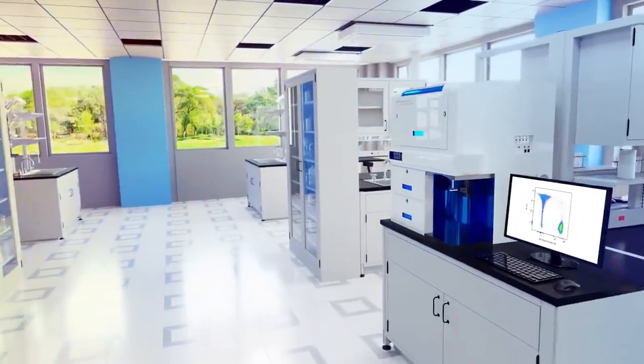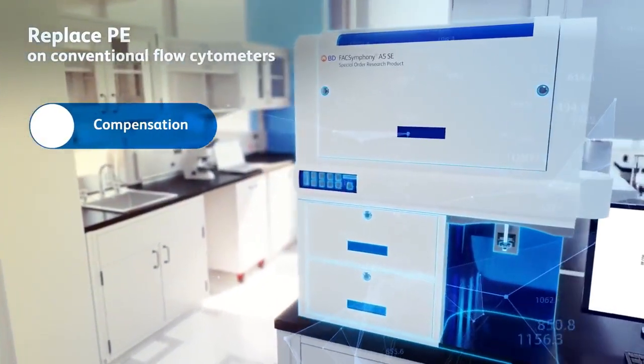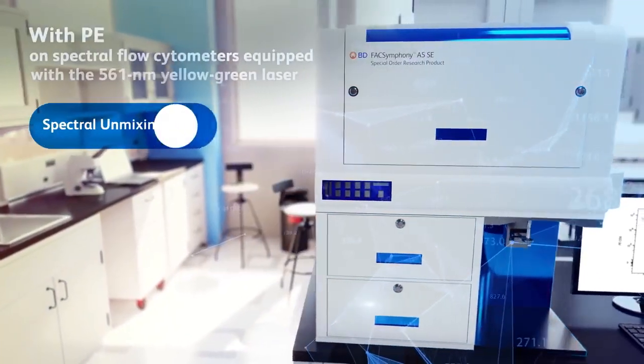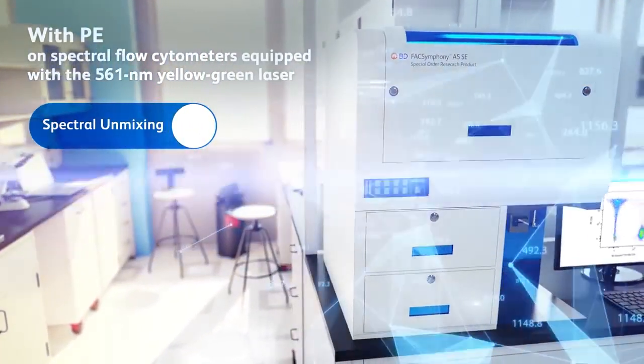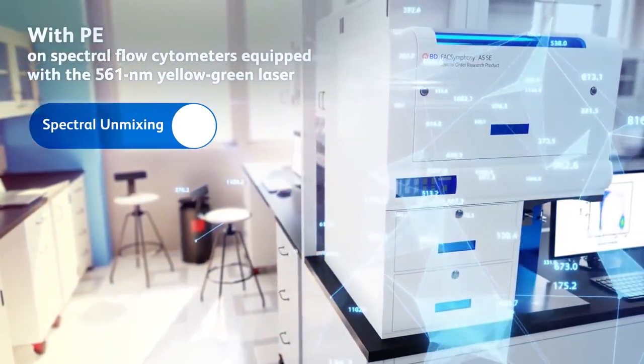RY 586 reagents can replace PE on conventional flow cytometers or be used with PE on spectral flow cytometers to increase parameters for deep scientific insights.